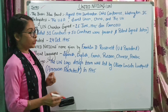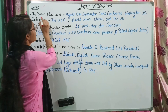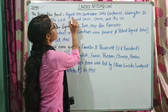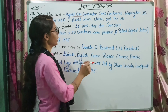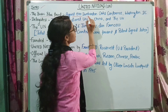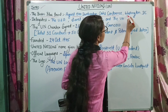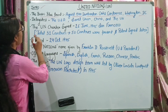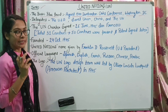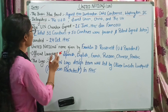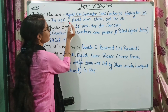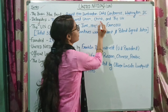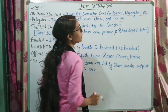Introduction: United Nations का Basic Blueprint ready किया गया था August 1944 को, in the Dumbarton Oaks Conference, Washington D.C., USA में. इस Conference में जो Delegates थे, वो थे: The USA, Soviet Union, China, and the UK.